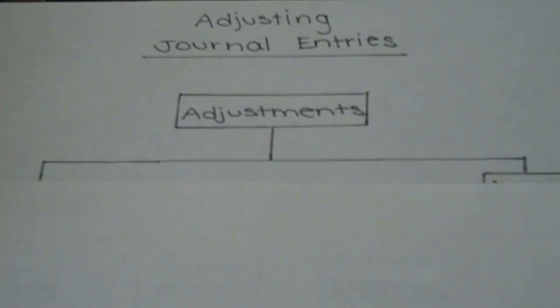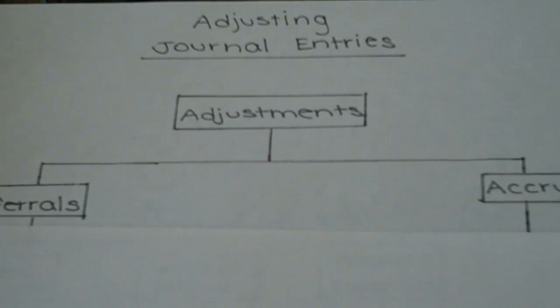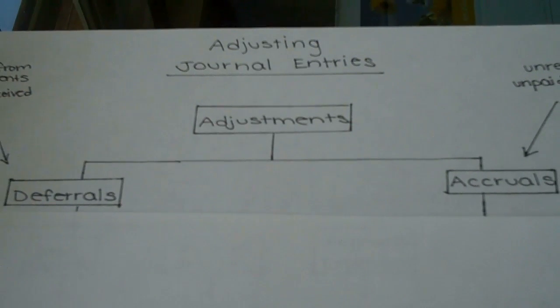Now, depending on a company's accounts, there are a series of adjustments that need to be made. These adjustments can be separated into two main categories. Those two categories are deferrals and accruals.